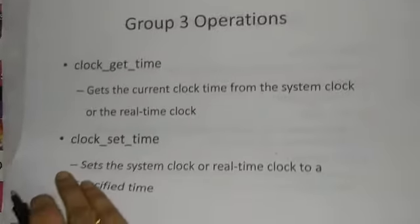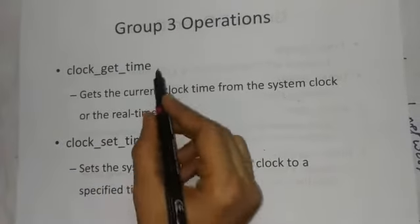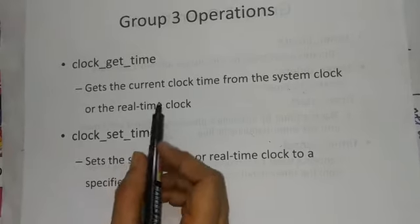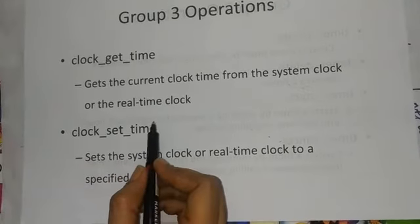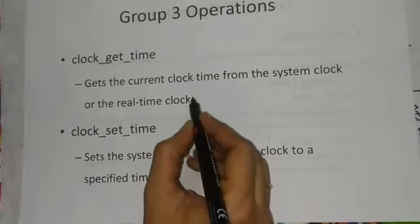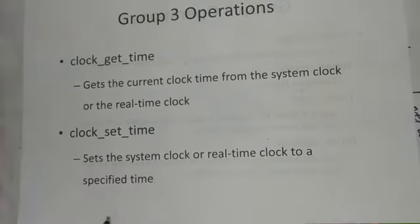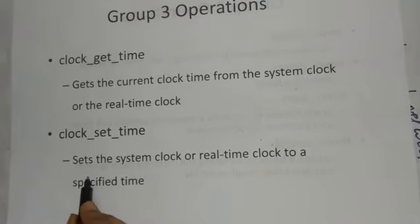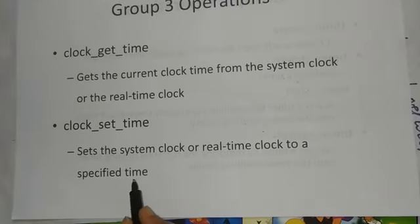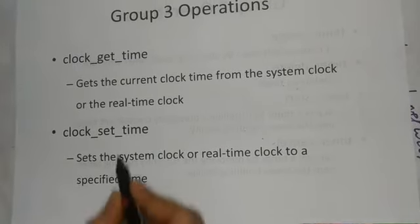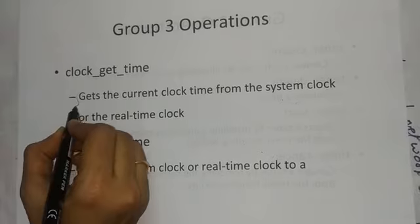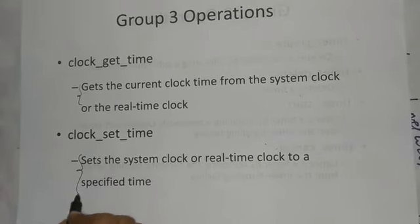Group 3 operations are get time and set time. Get time retrieves the current value based on either the system clock or real-time clock. Set time sets both the system clock and the real-time clock to a specified time, displaying the value from the original up to the present.